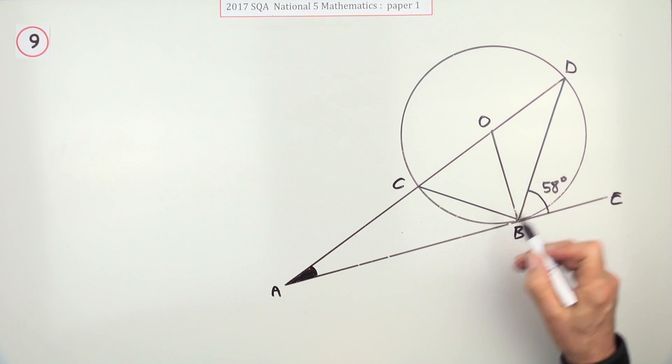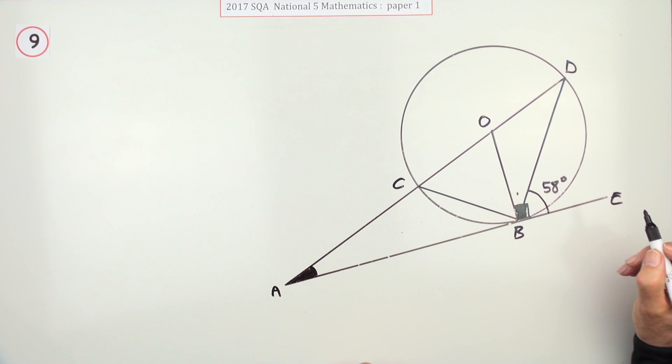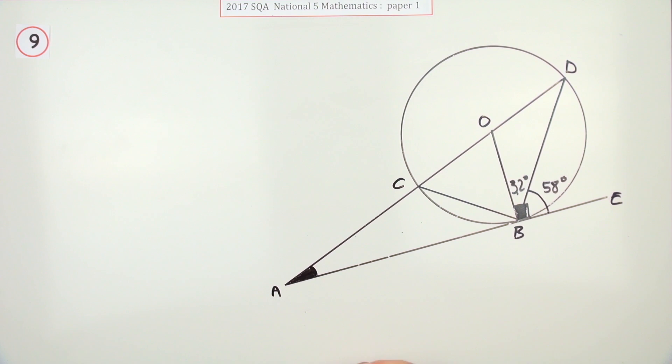The two things that you know are a tangent meets a radius at right angles. I'll just shade that in there. So straight away you can work out this one. So that'll be the first one I'll work out. What's 58 away from 90? That'll be 32.